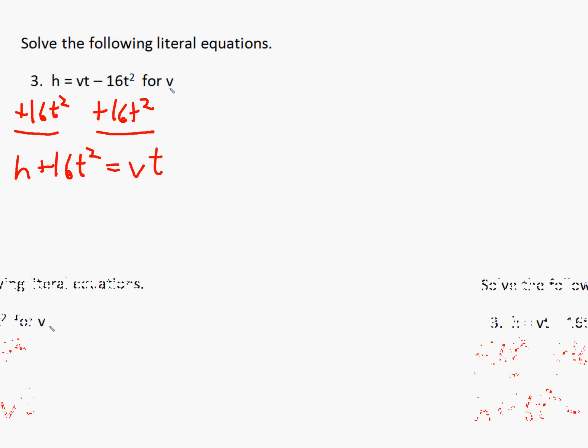And again, solving for v, we see v is multiplied times t, so we're going to go ahead and divide both sides by t.